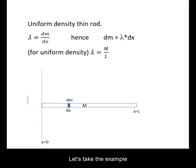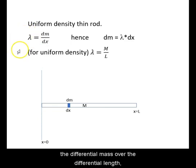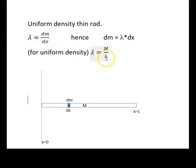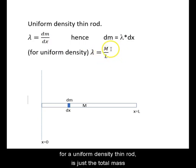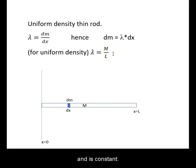Let's take the example of a uniform density thin rod. The rod is of length L and total mass M. Its line density lambda defined as the differential mass over the differential length for a uniform density thin rod is just the total mass over the total length and is constant. Hence, our expression for differential mass can be formulated as the constant lambda times dx.